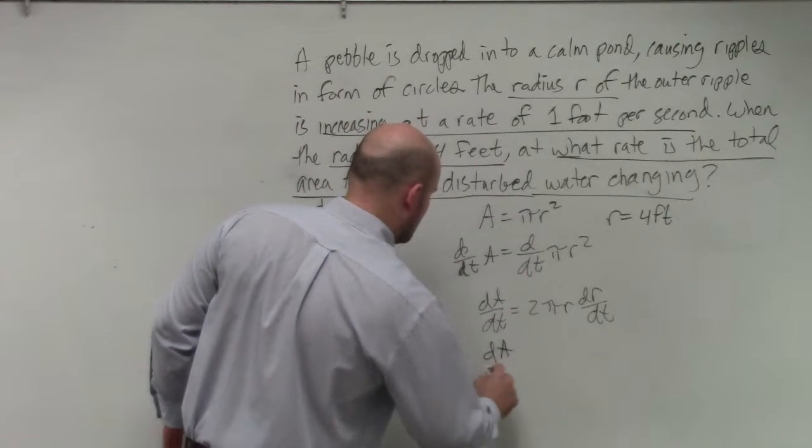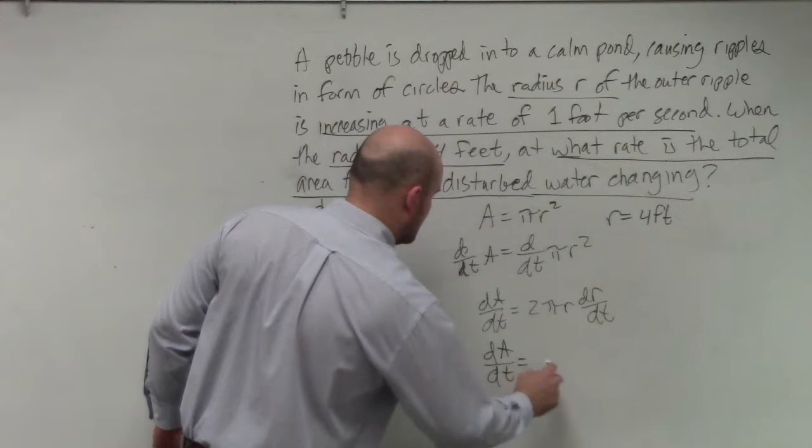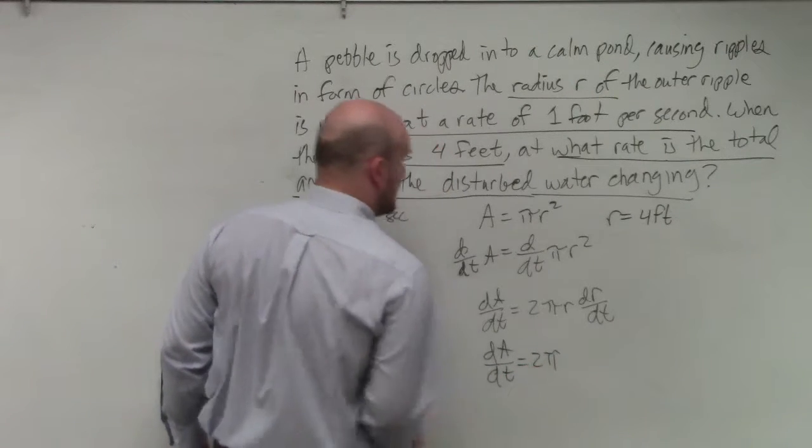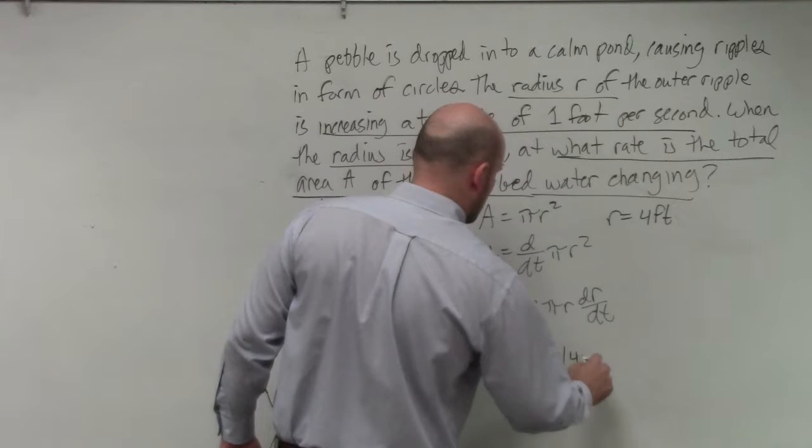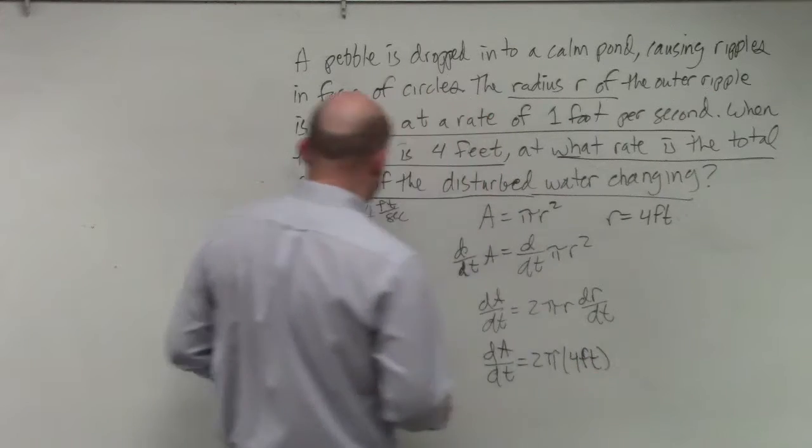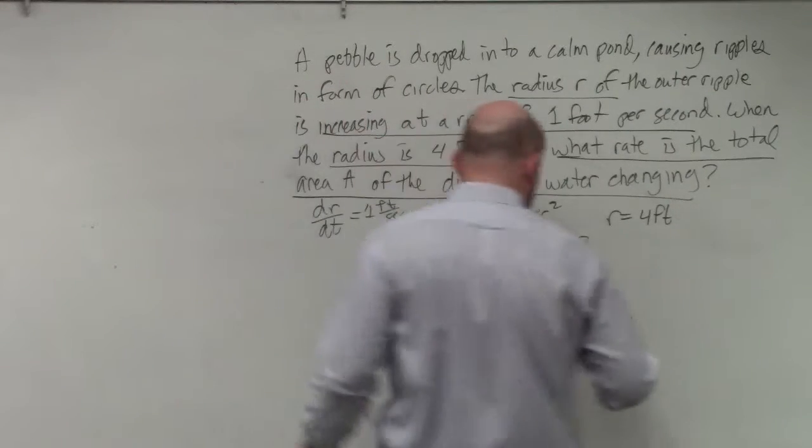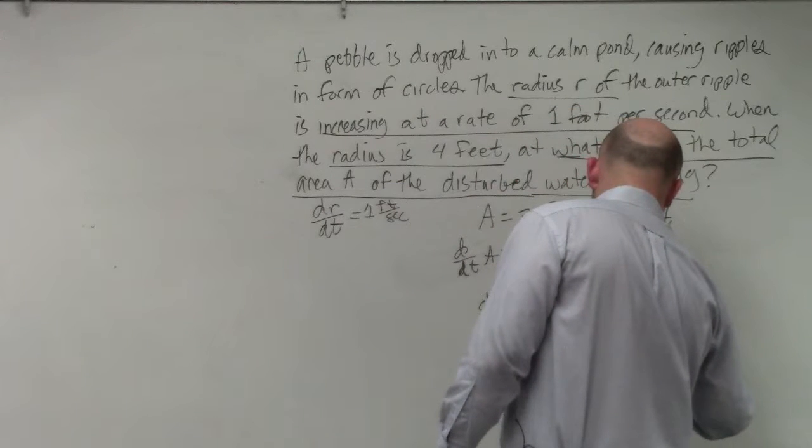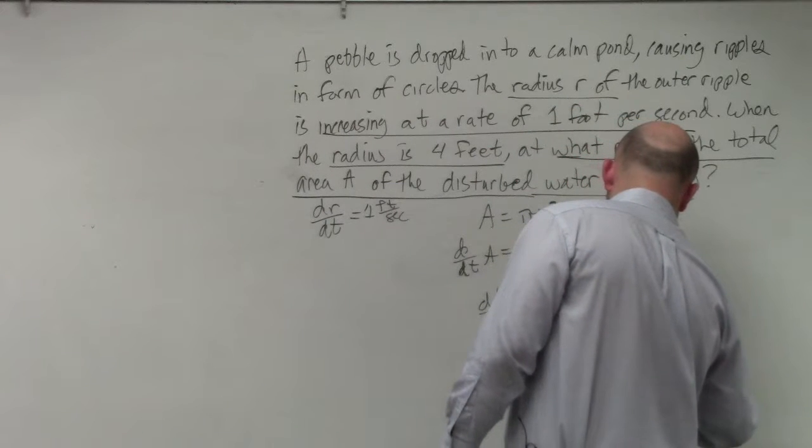So I have dA/dt is equal to 2πr is going to be 4, 4 feet, and dr/dt is going to be 1 foot per second.